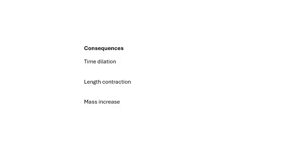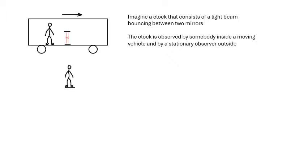When you do the mathematics, Einstein's postulates lead to three consequences: time dilation, length contraction, and mass increase. In this video we'll look at the first two — time dilation and length contraction. Mass increase is covered in the next video.